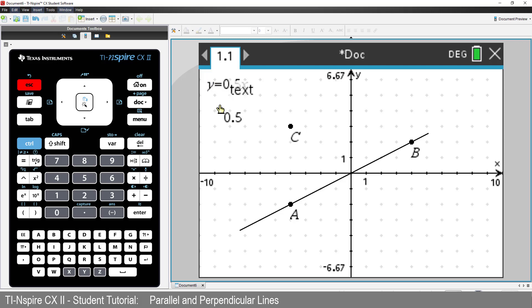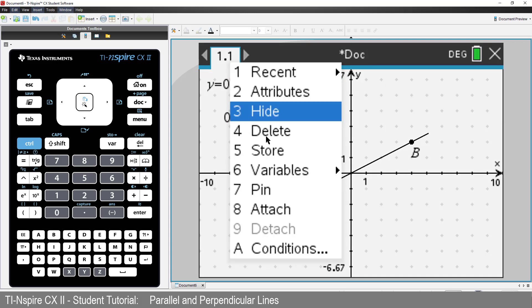Now place the mouse over the slope measurement and press Control followed by Menu. We're going to store this slope in a variable.